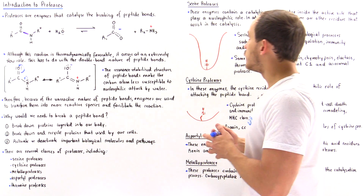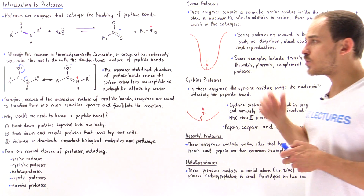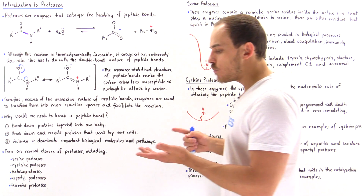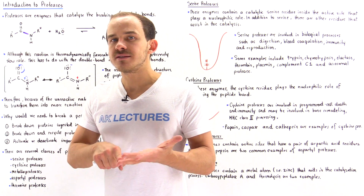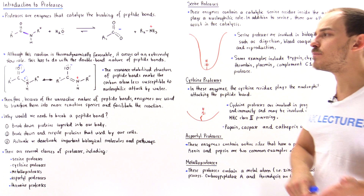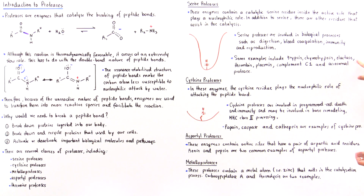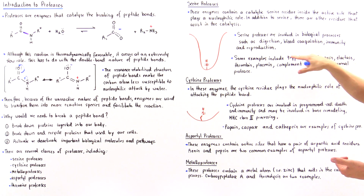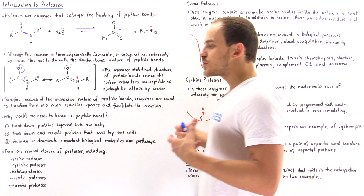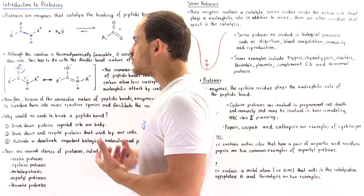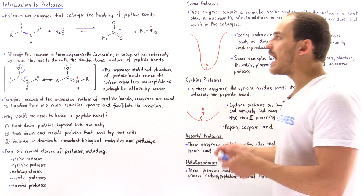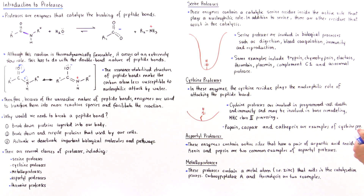What are some examples of serine proteases and their roles? Starting with digestive enzymes, we have trypsin, chymotrypsin, and elastase — these three are digestive enzymes found inside our small intestine that play the role of breaking down the proteins that we ingest.